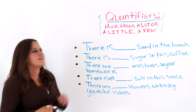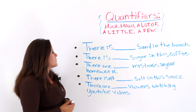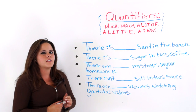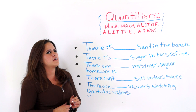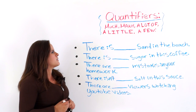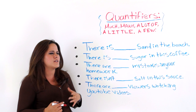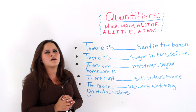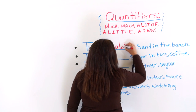It's practice time. You're going to help me fill in the blanks with the correct quantifier: much, many, a lot of, a little, a few. The first one says: there is blank sand in the beach. Which one are we going to use? 'There is many sand' — no, right? Many is for countable. I'm just saying sand, not sand boxes or sand clocks — it's uncountable. So we're going to use: there's a lot of sand in the beach. Remember, a lot of you can use for countable and uncountable nouns.